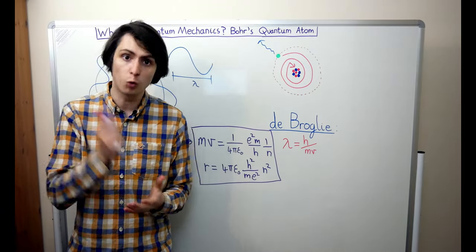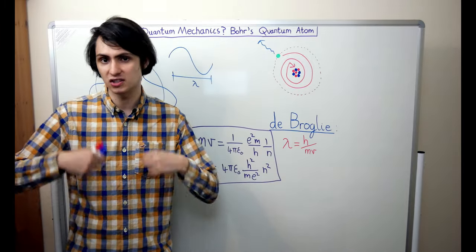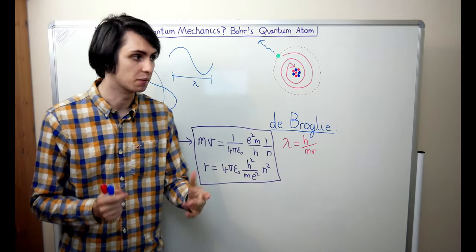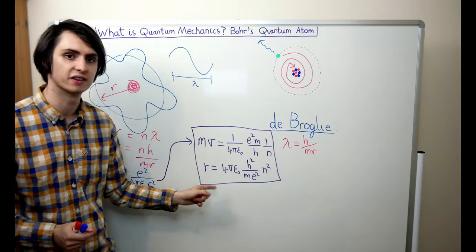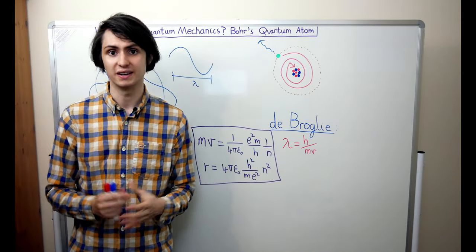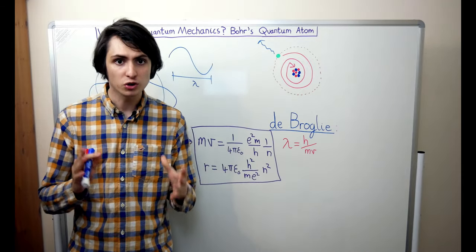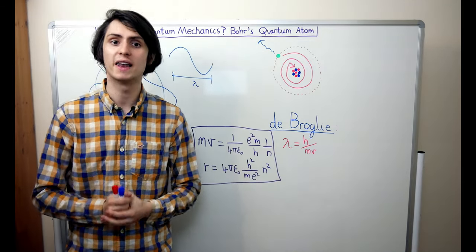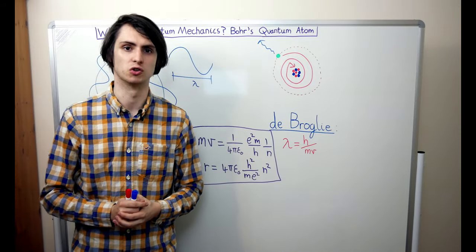An electron also can't just fall into the nucleus because there's a smallest possible orbit, namely when n equals 1 in this equation. Once the electron falls into this lowest orbit, it can't get any closer to the nucleus. Bohr's model explains why electrons don't just spiral into the nucleus.